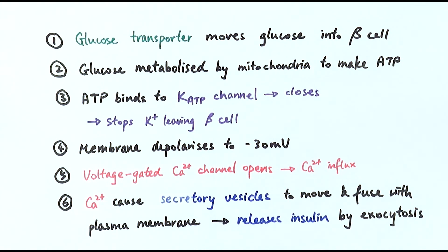Because of this depolarization, the voltage-gated calcium ion channels open, causing calcium ion influx. When the calcium ions enter the cell, they cause the secretory vesicles to move and fuse with the plasma membrane, releasing the insulin by exocytosis. The insulin then causes various effects to decrease the blood glucose level.